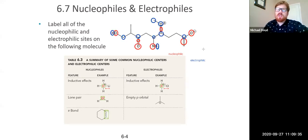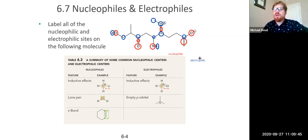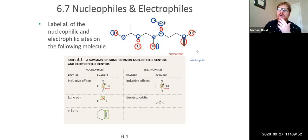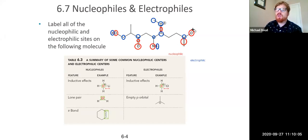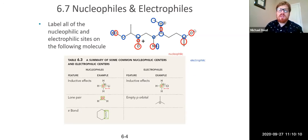Let's walk through it. Starting with the easy ones: any atom that has a positive formal charge is going to be electrophilic — it's an area of low electron density that can accept more electron density. And anything with a negative formal charge is going to be nucleophilic — that's an area of high electron density, like this oxygen over here, that will want to attack an electrophilic site.